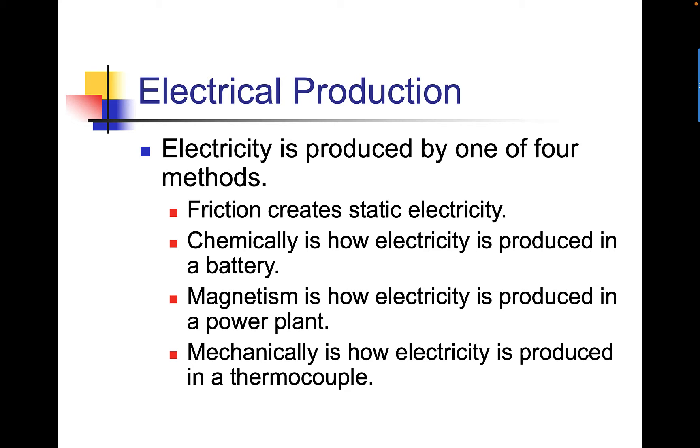Electricity is produced by one of four methods. Friction, which creates static electricity. Chemically, that's how electricity is produced in a battery. Magnetism is how electricity is produced in a power plant. Mechanically, that's how electricity is produced in a thermocouple.